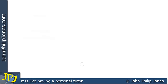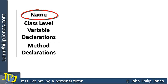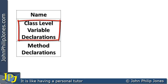Another view of a class we can take is as follows. We can still have the name of the class, as shown here, and where we previously had attributes, we can often refer to those as class-level variables, and in this area we declare our class-level variables. What are they? Integers, doubles, booleans — typical variables. Within our class, we define variables that are at the class level.